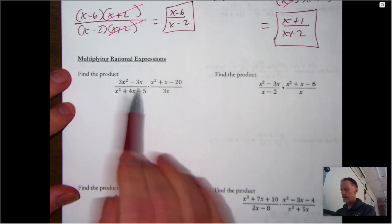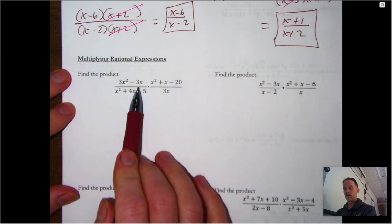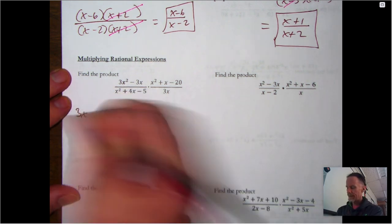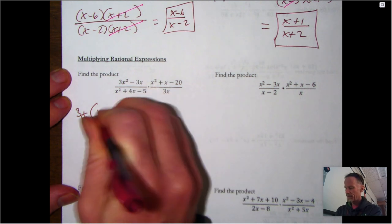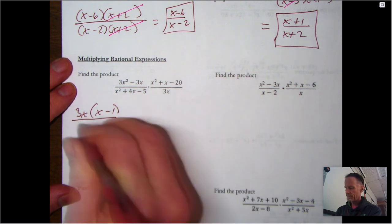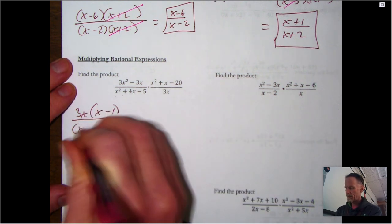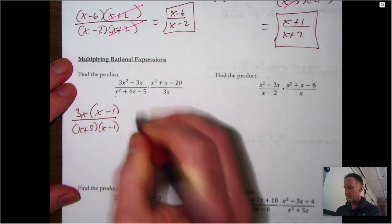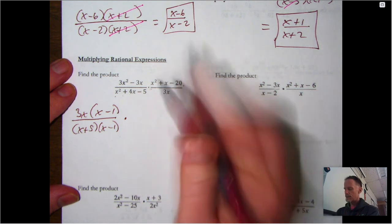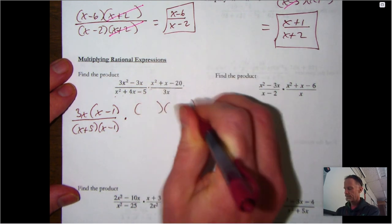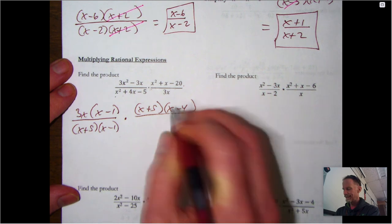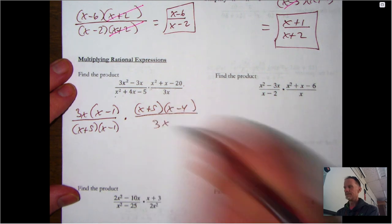On this first multiplication example, the top of the first fraction has a greatest common factor of 3x, leaving (x-1). The bottom, x²+4x-5, factors to (x+5)(x-1). For the second fraction, the top factors as (x+5)(x-4) — since we need numbers that multiply to -20 and add to +1 — and the bottom is just 3x, which we leave as is.